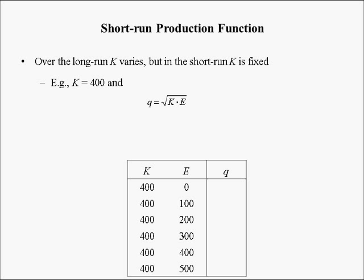Now I'm going to use the same production function to demonstrate the law of diminishing marginal productivity. Here we're holding capital constant at 400 — this represents the short run. In the short run, capital is fixed; in the long run, every variable is adjustable. With K=400, the square root of 400 is 20, so the short-run production function is Q = 20√E.